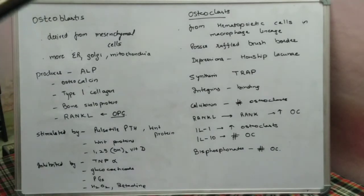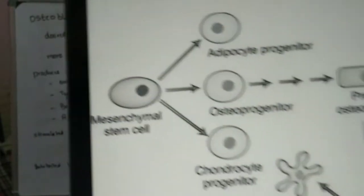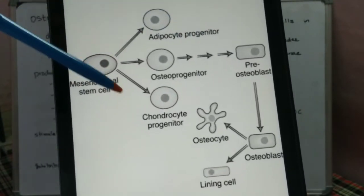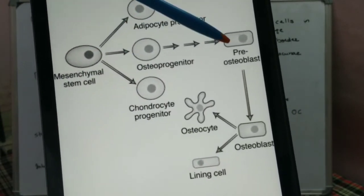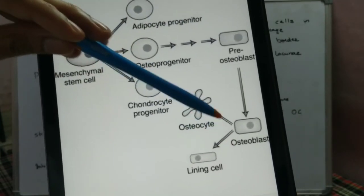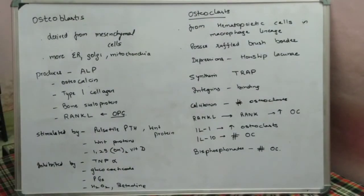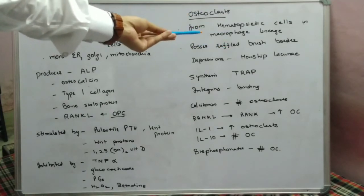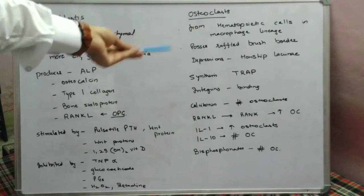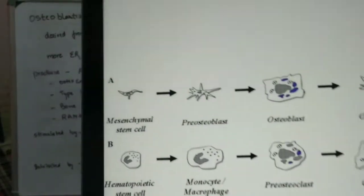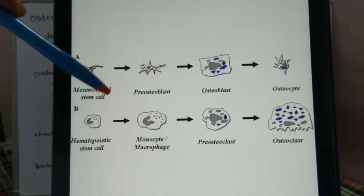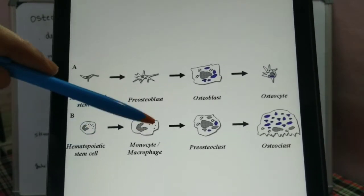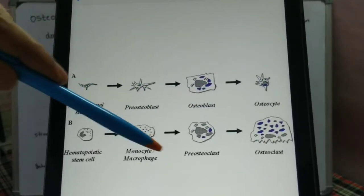Now moving on to the osteoclast. To revise the pathway: the basic stem cell can give rise to an adipocyte progenitor, chondrocyte progenitor, or osteoprogenitor. Importantly, while osteocytes and osteoblasts are from the mesenchymal stem cell lineage, the osteoclast is from the hematopoietic stem cell lineage — specifically from monocytes and macrophages — leading to the pre-osteoclast and osteoclast.